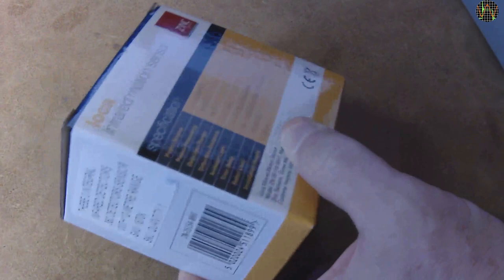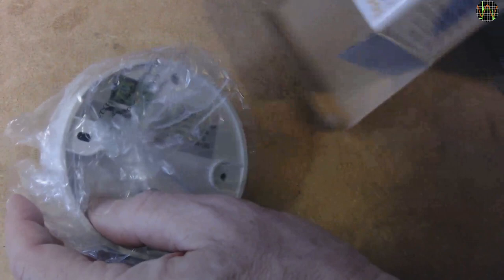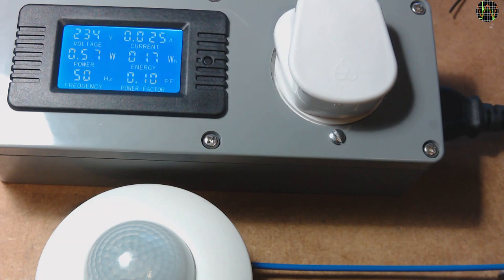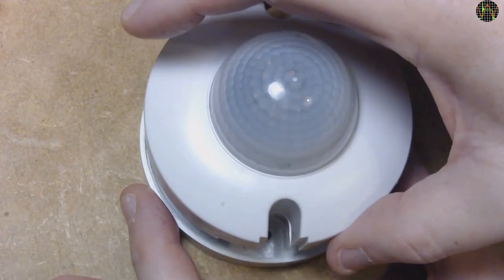Since I had another separate PIR sensor lying around, I thought it would be a good idea to check its power consumption as well. This one is actually meant for indoor ceiling installation but I have never used it. As you can see its data is very similar to the one used by the bulkhead light, slightly less real power but at an even worse power factor.